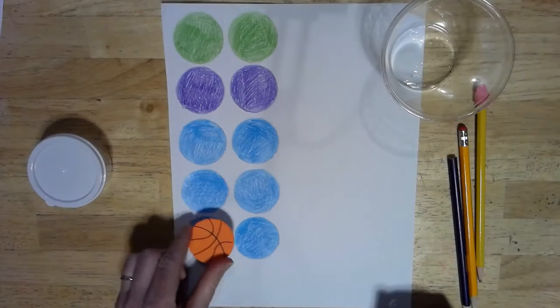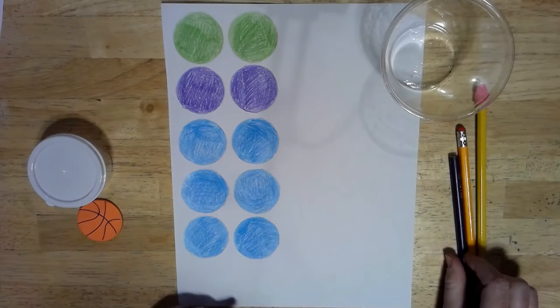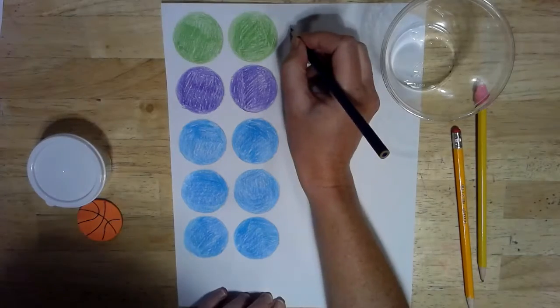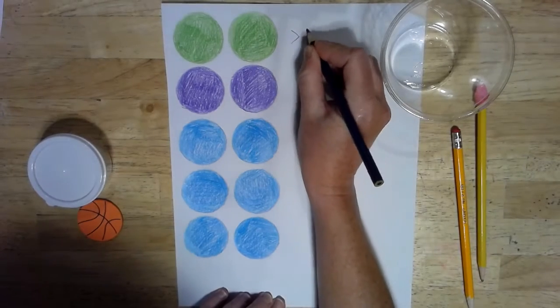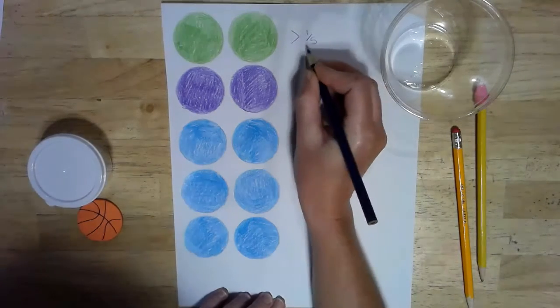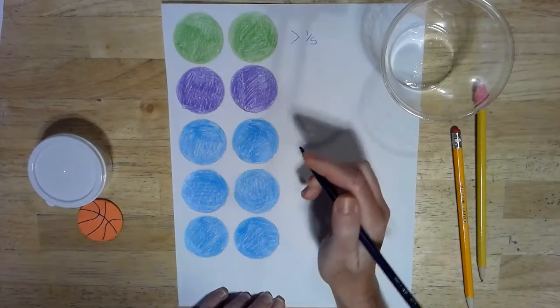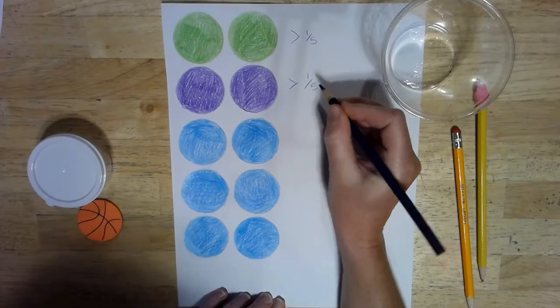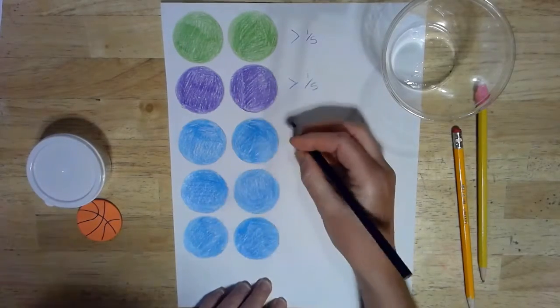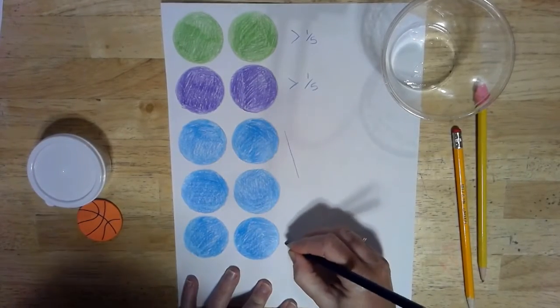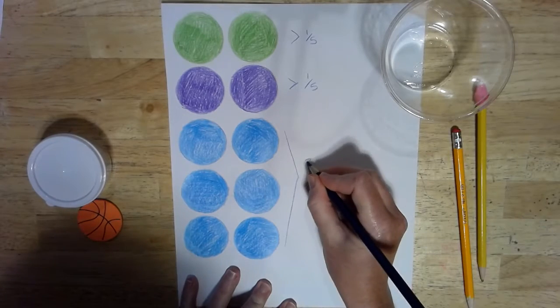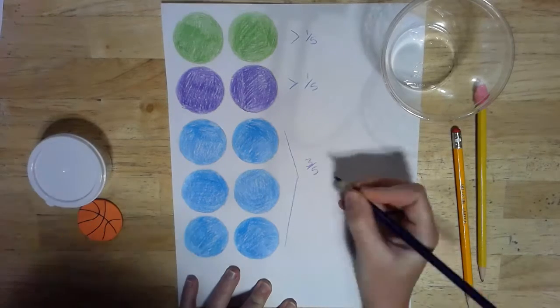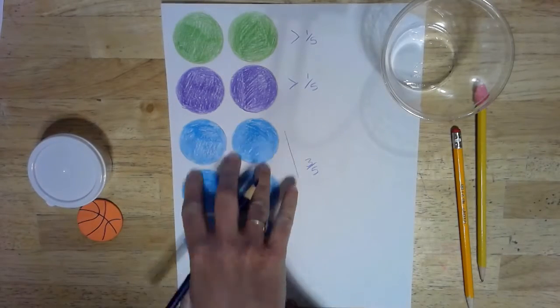So, trace out ten circles, and from those ten circles, I want one-fifth to be one color. It doesn't have to be green. It can be another color. Another one-fifth to be a second color. And the last three-fifths of your circles to be another color, a third color.